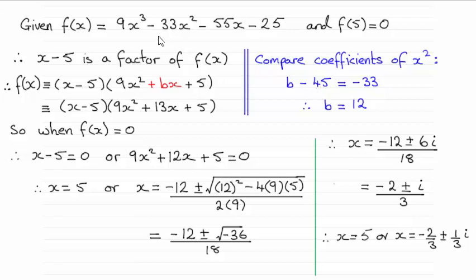And that's got to total minus 33x². So I've written that coefficient there, minus 33. And from this you can see that b equals 12.